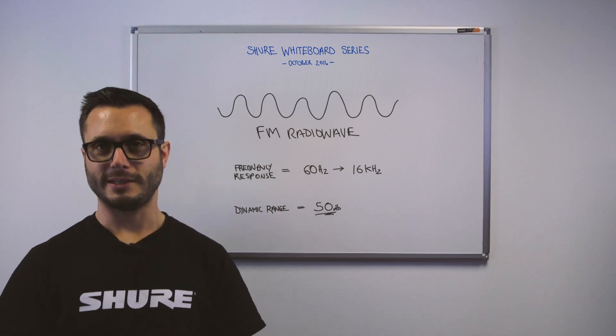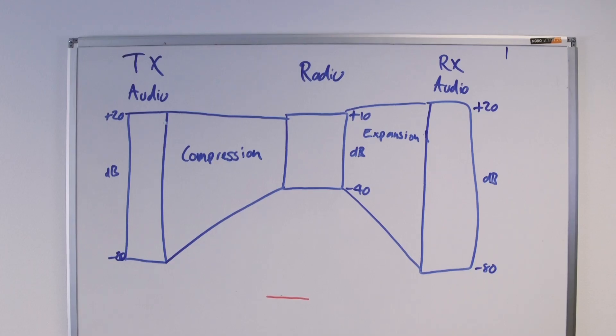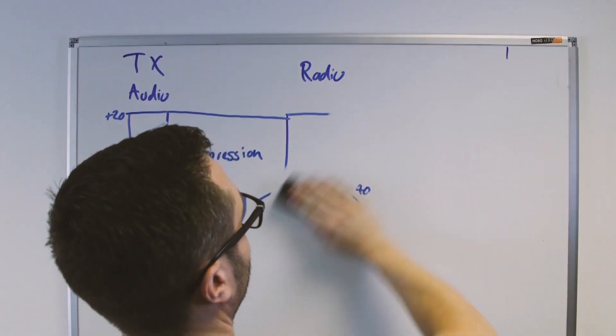So how do we get 100 dB of audio down into just 50 dB or so? Well, we can use something called companding. So in the transmitter, we'll firstly compress the audio dynamically from 100 dB to about 50 or so, then transmit it across the airwaves, and then in the receiver, we'll then expand it. This compressing and then expansion we call companding.